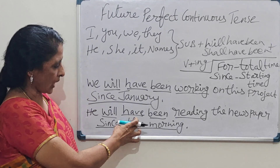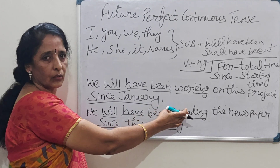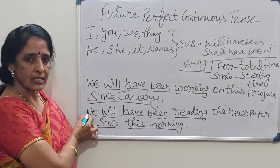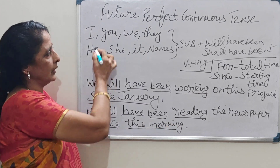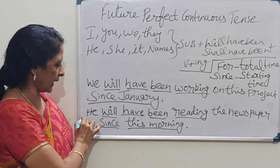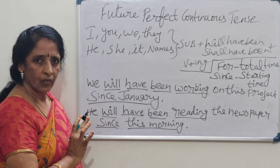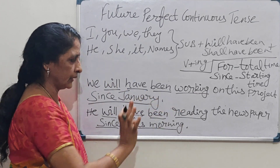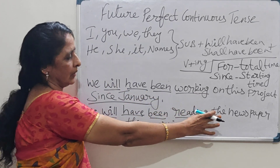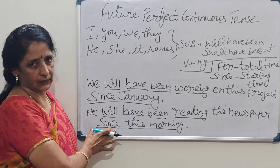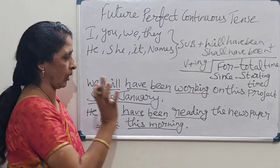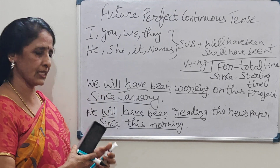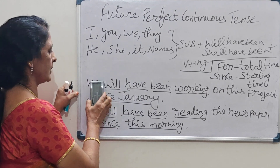The action started this morning — he has only been reading the newspaper. So we write 'since this morning.' Subject, then 'will have been' for Future Perfect Continuous Tense, then verb plus ing, then 'since' for starting time.